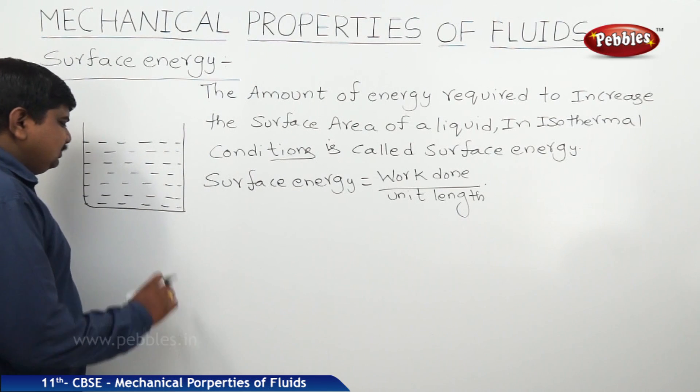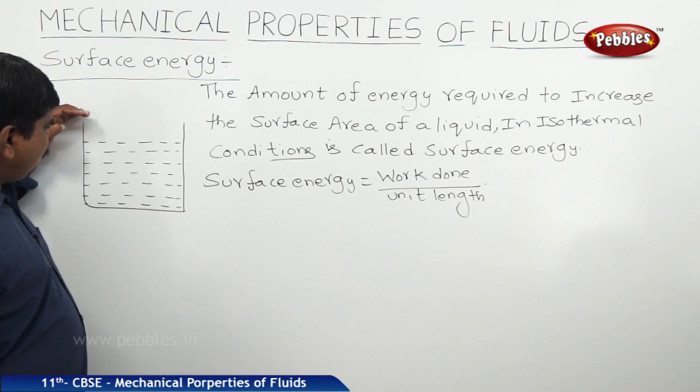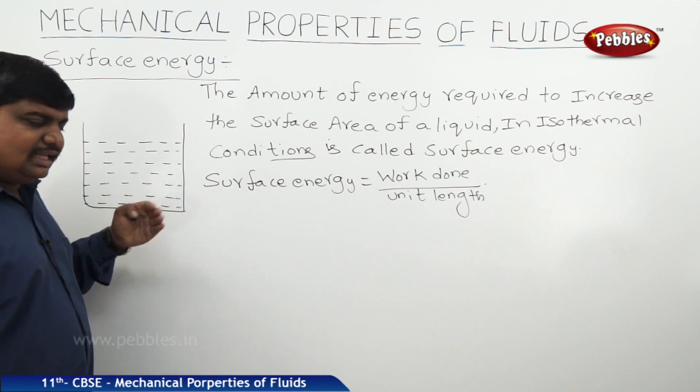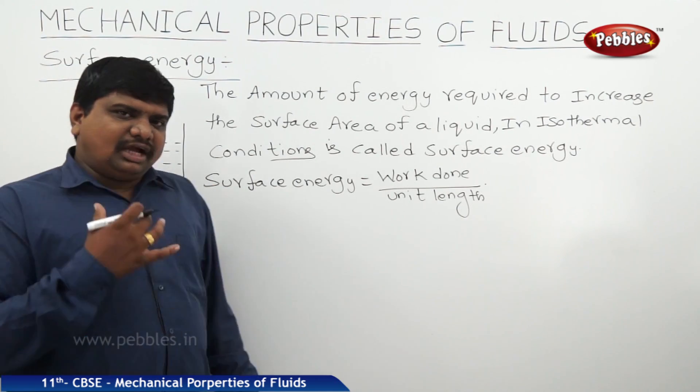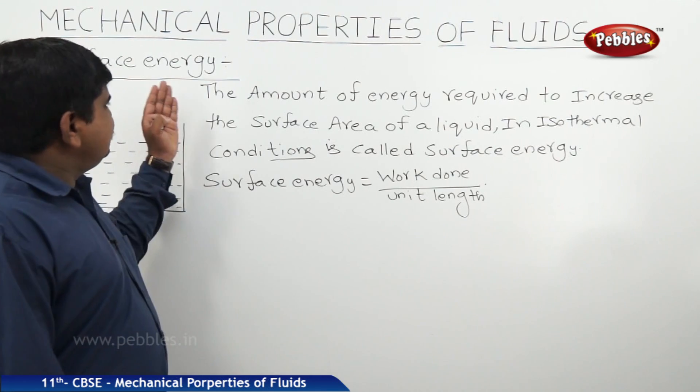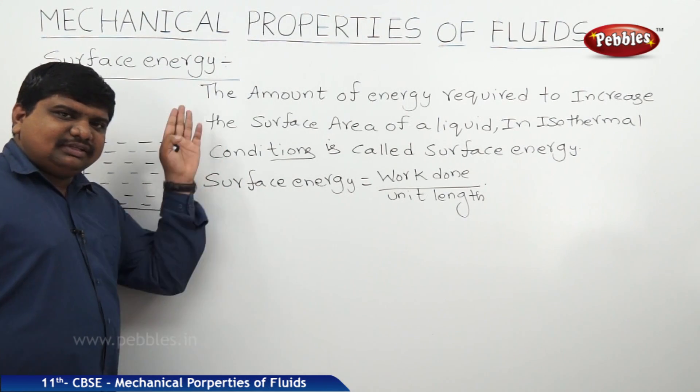Let us suppose this is the liquid and this liquid should be increased and its surface area should be increased to L. I mean its length should be increased by a unit of L. How much amount of work I should do? This is said to be surface energy. Now we will discuss the equation part for this physical quantity.